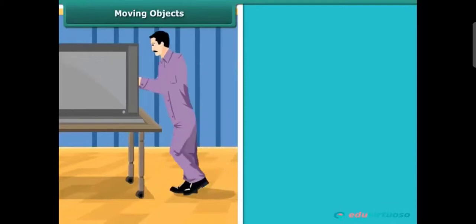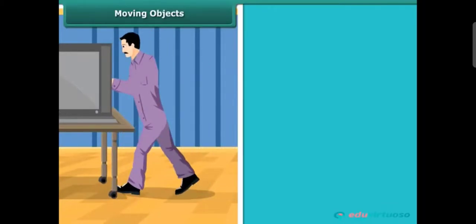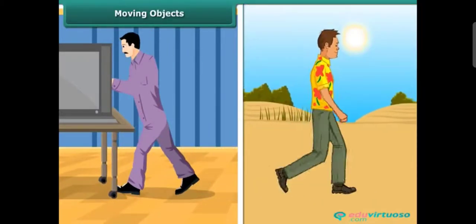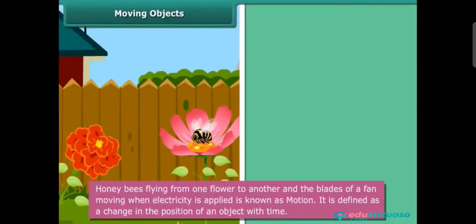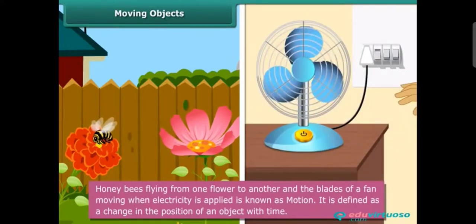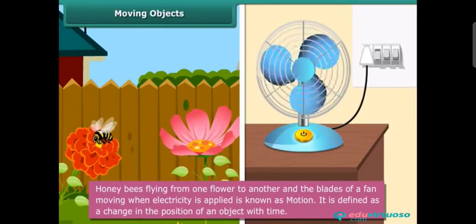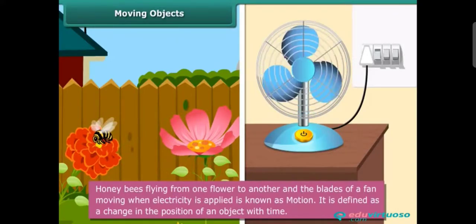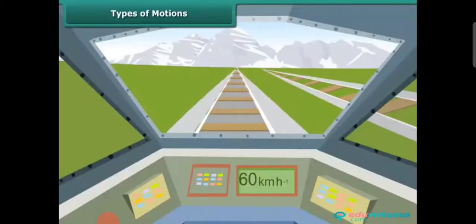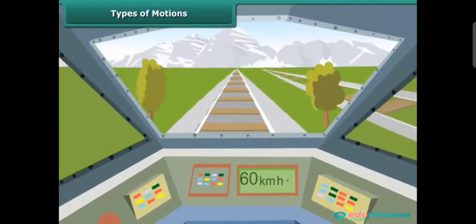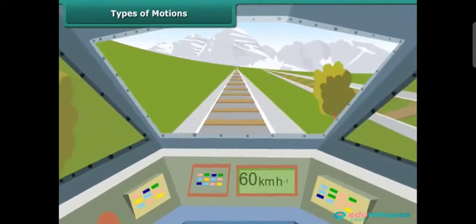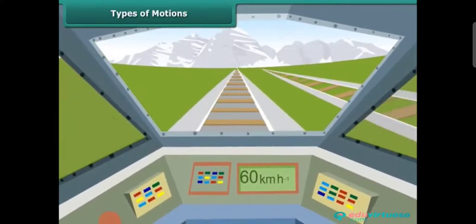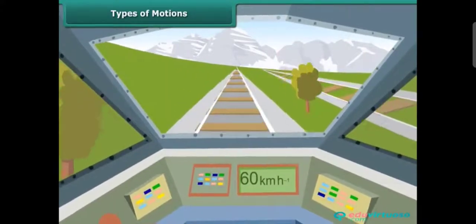Moving objects — you will notice that there are objects that move when you apply force or are moving on their own. For example, you will see honeybees flying from one flower to another. You will also notice that the blades of a fan move when electricity is applied. This is known as motion. Motion is defined as a change in the position of an object with time. The change in its position can be determined through distance measurements.